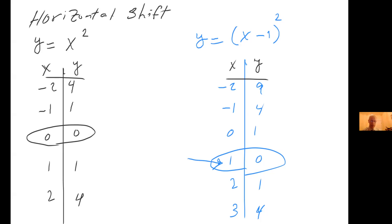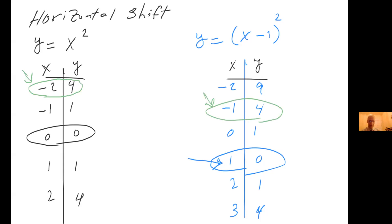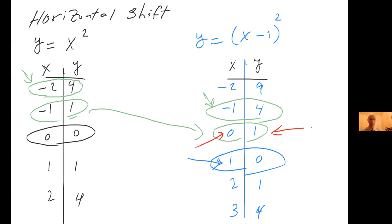Let's look at some other values. Notice that in the first table, input −2 gives output 4. If I want an output of 4 on the blue graph, notice that my input moved from −2 to −1 — so it shifted one unit to the right. Same thing holds for the other values: to get output 1, the input goes from 0 to −1, which is again one unit shifted to the right. I invite you to spend some time with this until you understand it better.